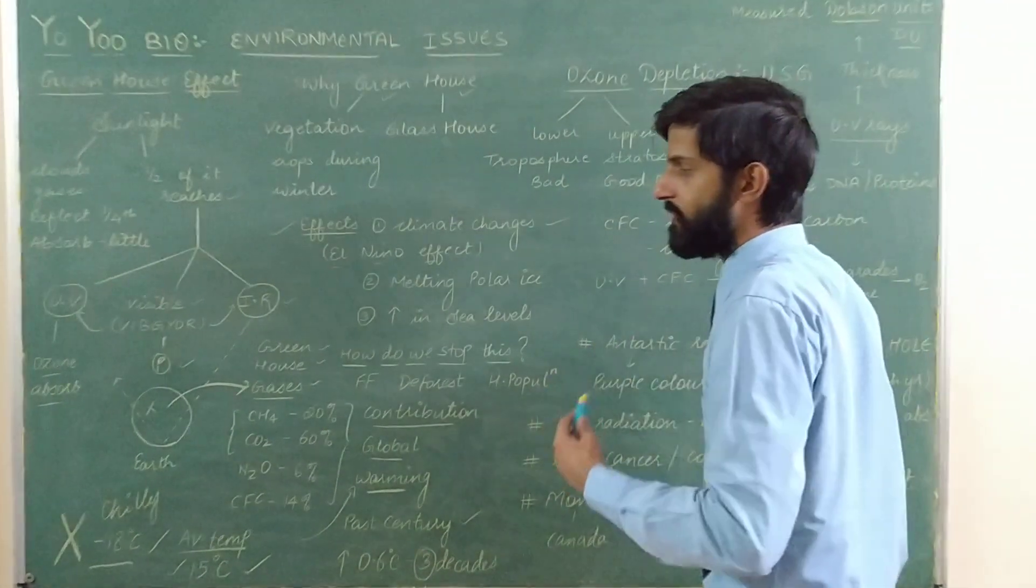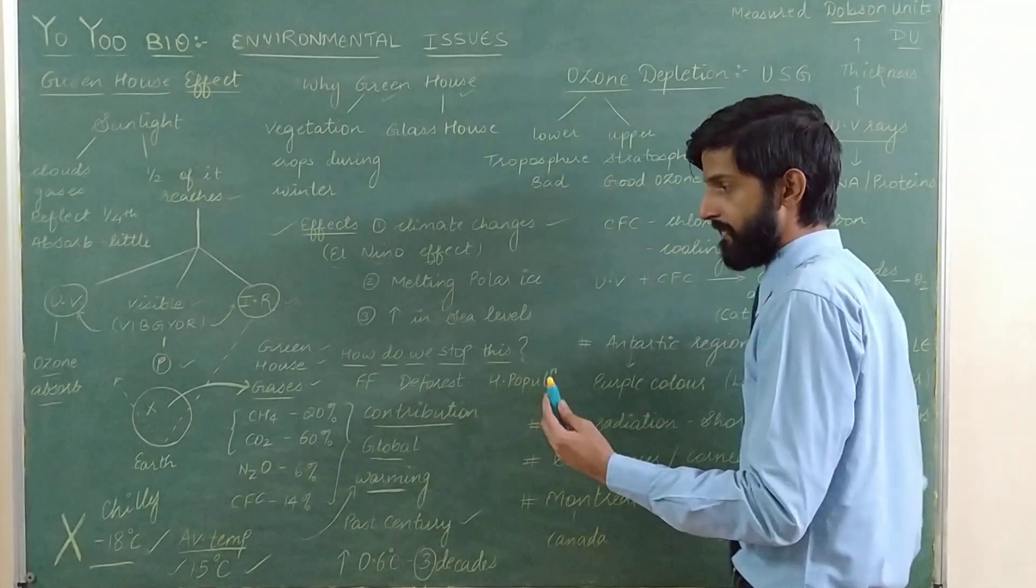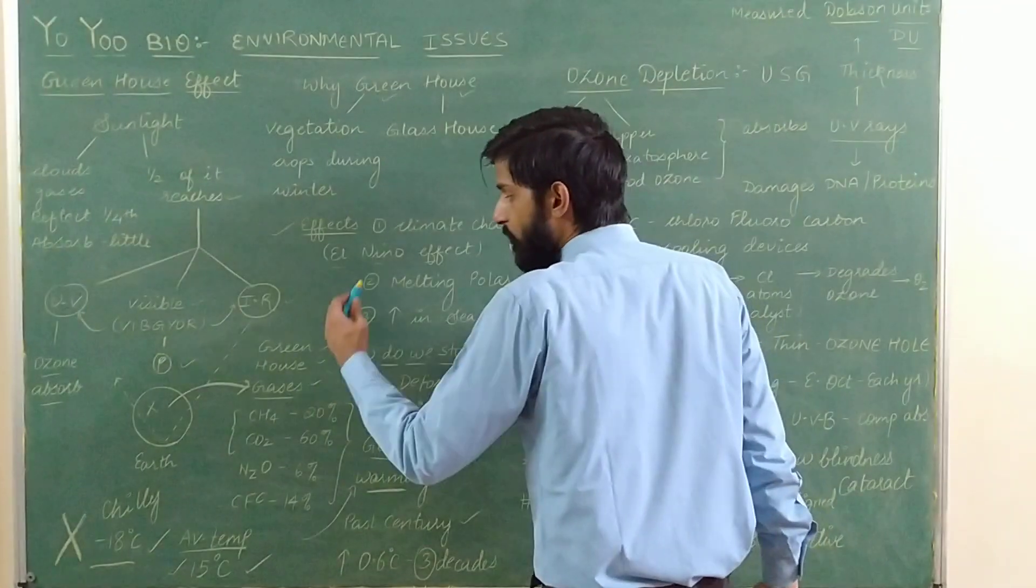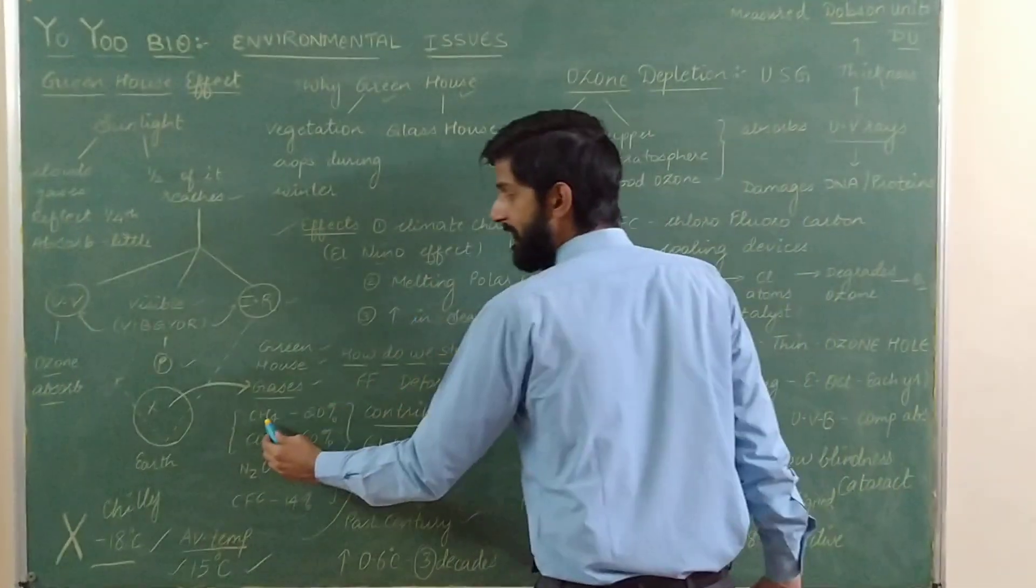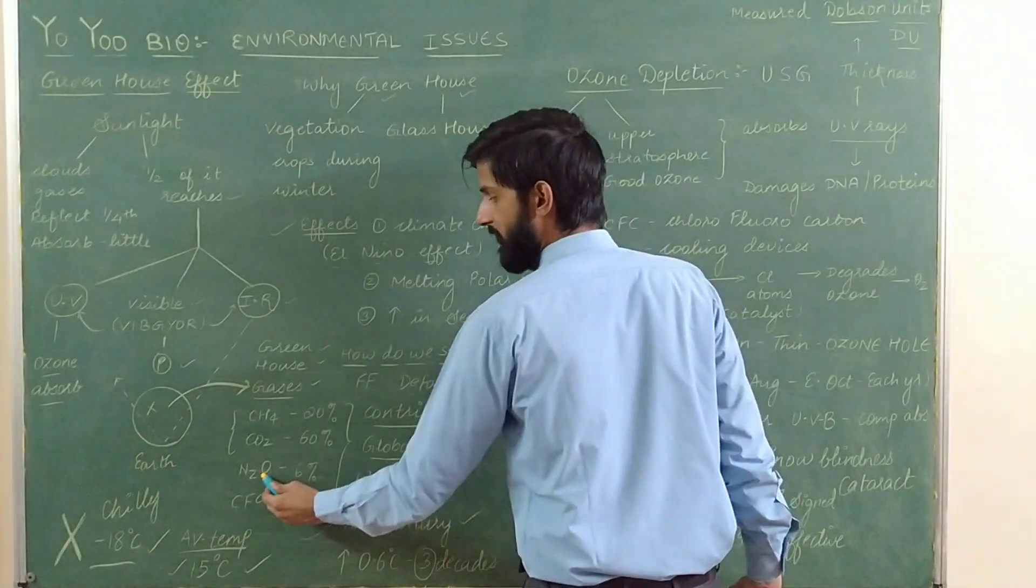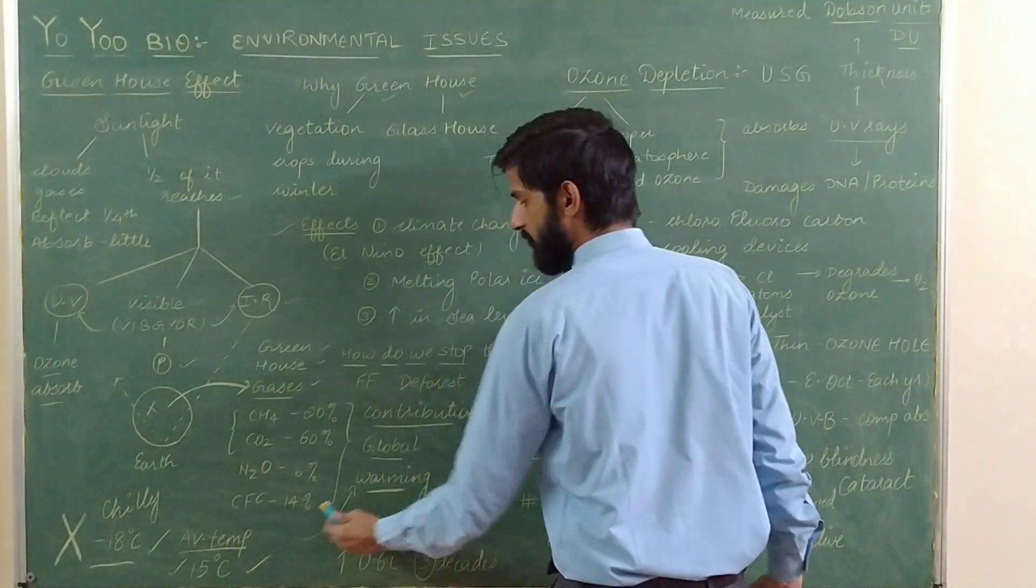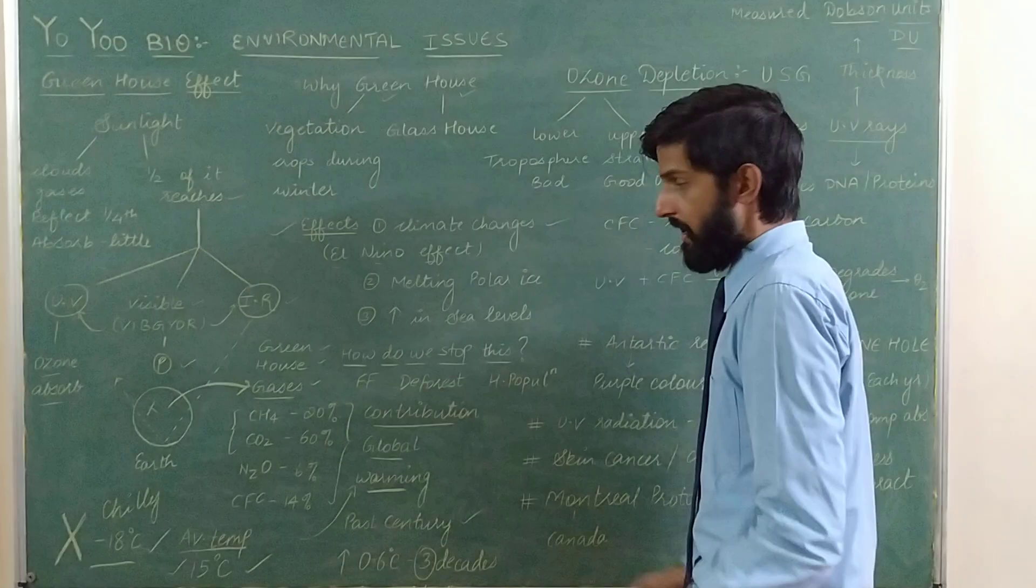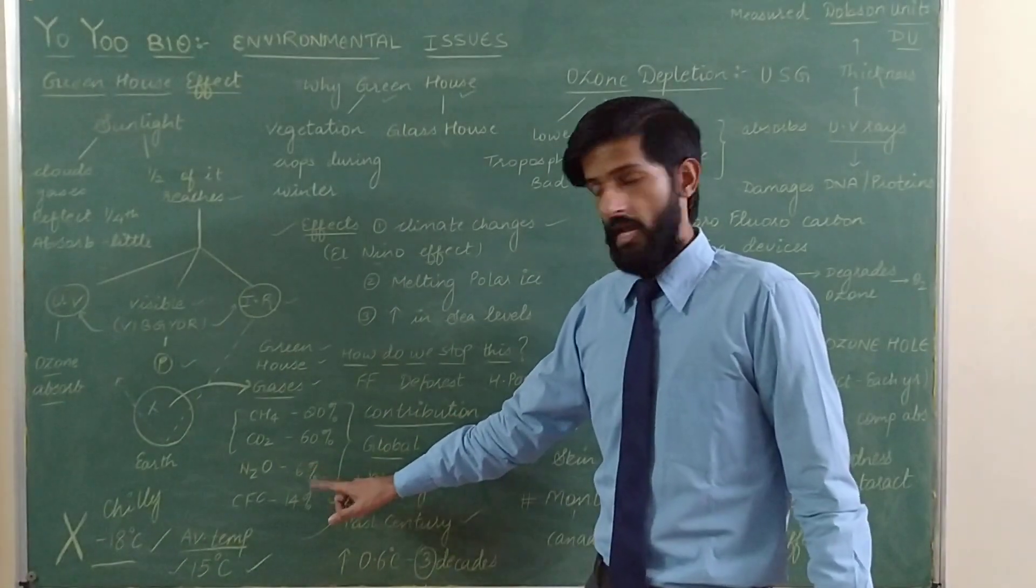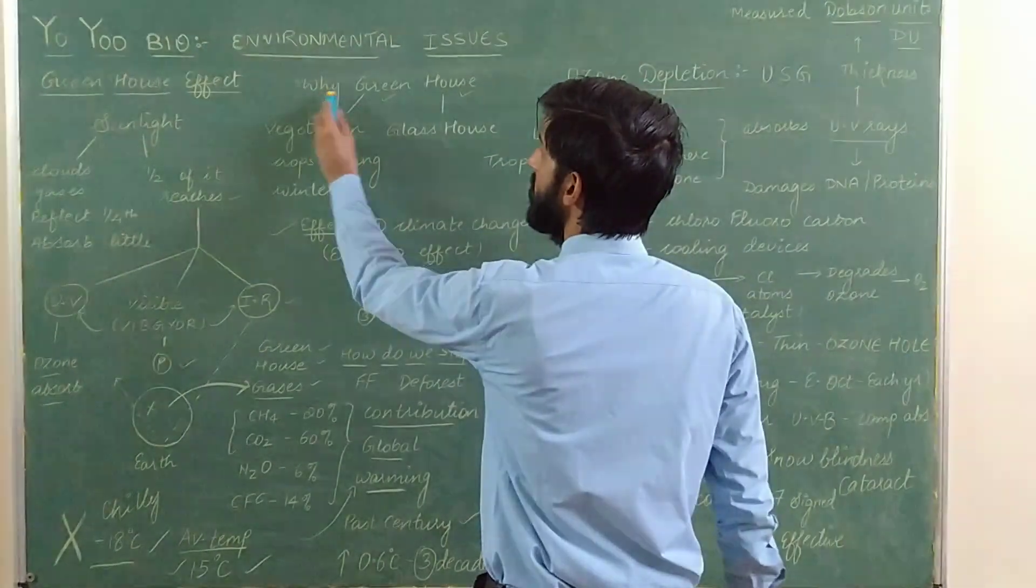It is very important to understand the contribution of the gases. In global warming, methane contributes 20%, carbon dioxide contributes 60%, nitrous oxide 6%, and chlorofluorocarbon contributes 14% towards global warming. This whole effect is called greenhouse effect.